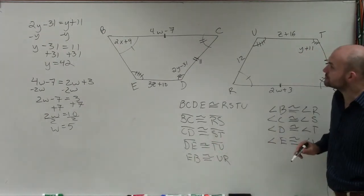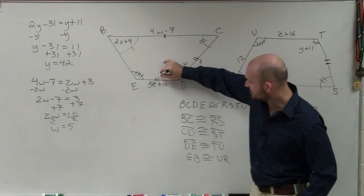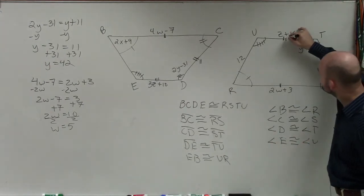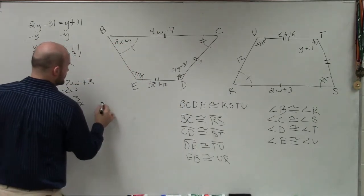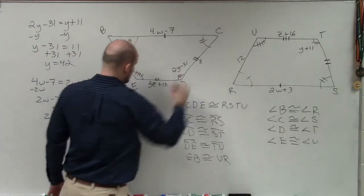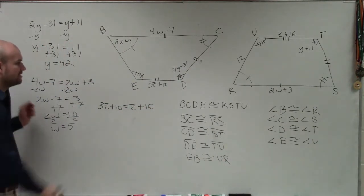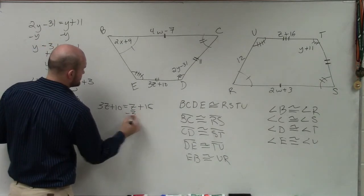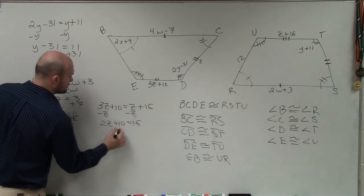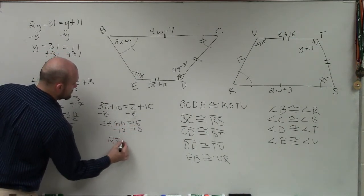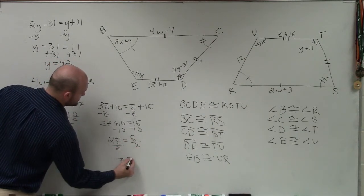D, E is congruent to T, U. D, E, one, two, three, is congruent to T, U. One, two, three. So therefore, we can now write our final equation, which is 3Z plus 10 is congruent to Z plus 16. That means they're equal in measure. Now let's solve for Z. So I subtract a Z on both sides. 2Z plus 10 equals 16. Subtract 10, subtract 10. 2Z equals 6. Divide by 2, divide by 2. Z equals 3.